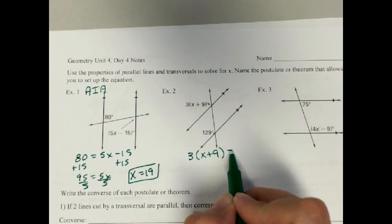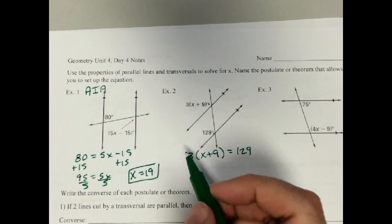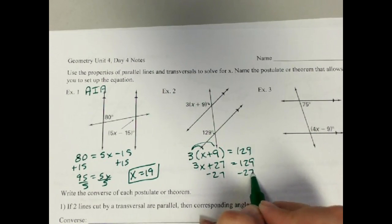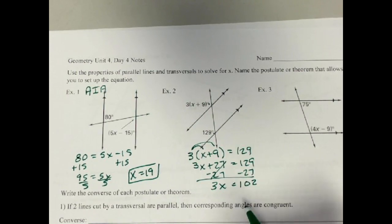Now this one, we maybe haven't seen these before, but you saw them in algebra. You just distribute this first. So I have 3x plus 27 equals 129. Then subtract the 27. These cancel. 3x equals 102. Divide by 3. And we get x equals 34.